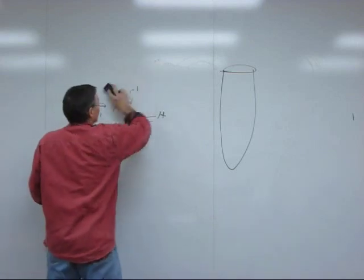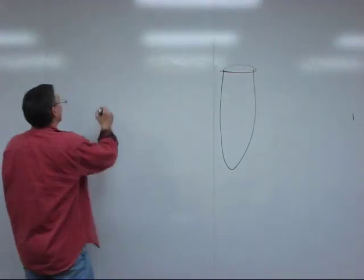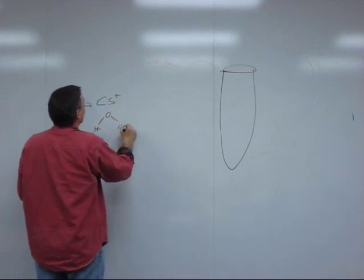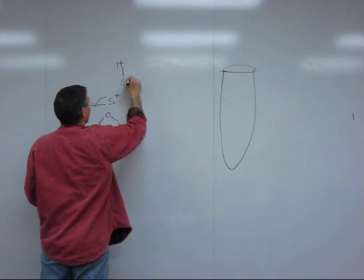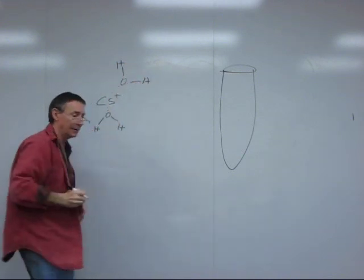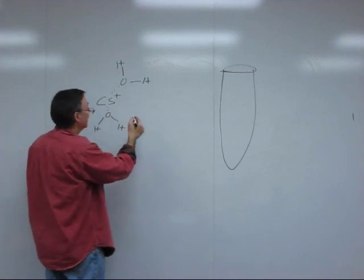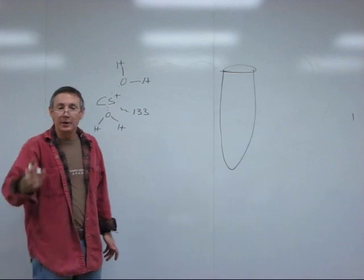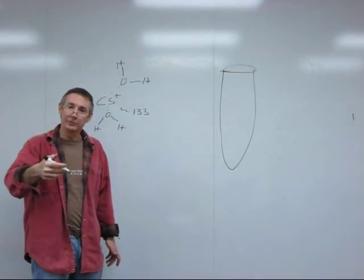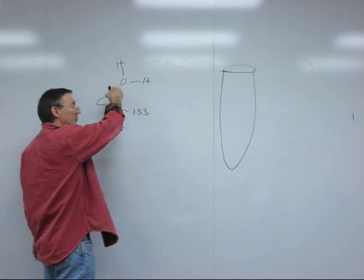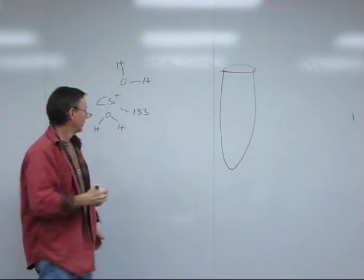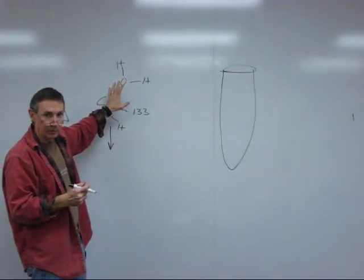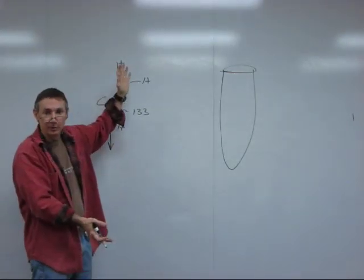But the cesium ions are attracted to the water molecules. However, the cesium ion has an atomic mass of around 133. It's a really massive ion. And so what happens when you centrifuge it at a really high force, it tends to push the cesium ions downward. So the force of centrifugation is pushing them downward. At the same time, the binding of the water molecules is opposing that and tending to keep them distributed evenly.